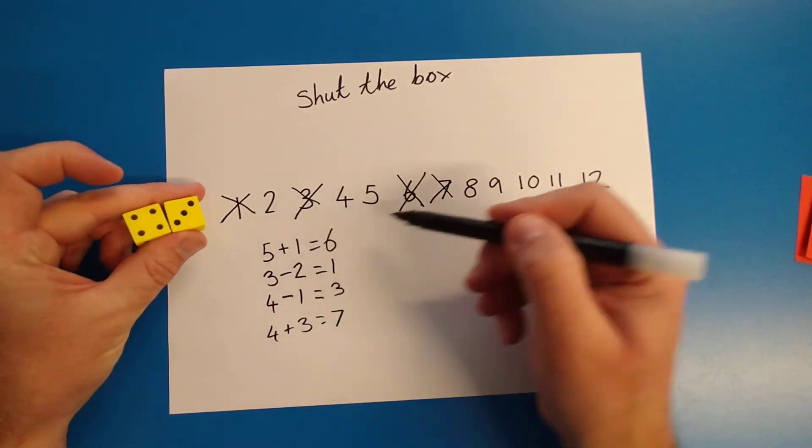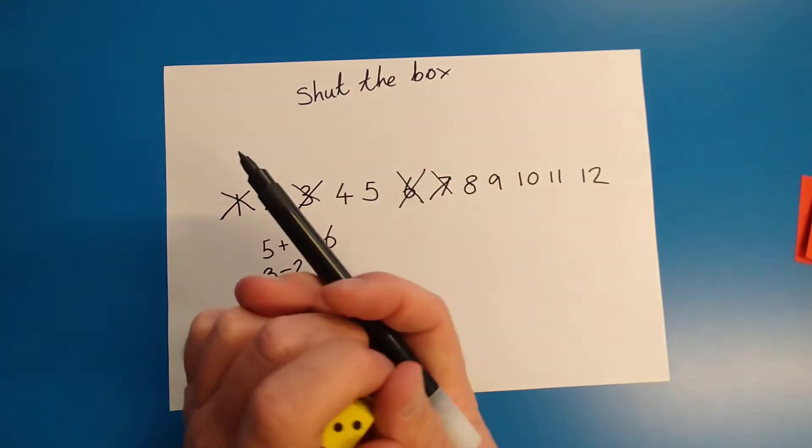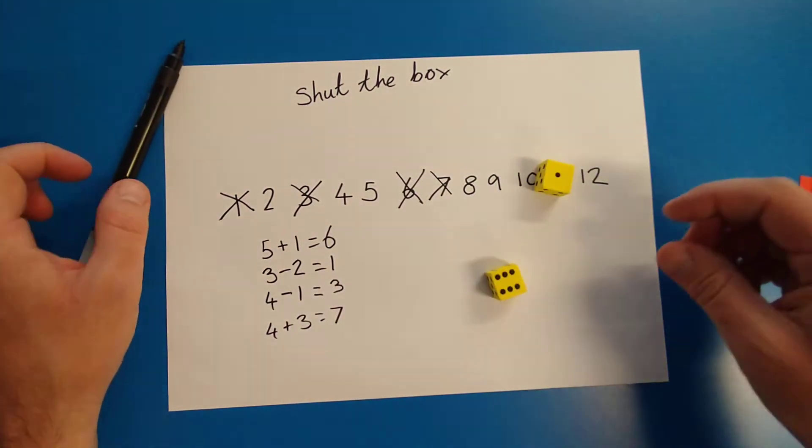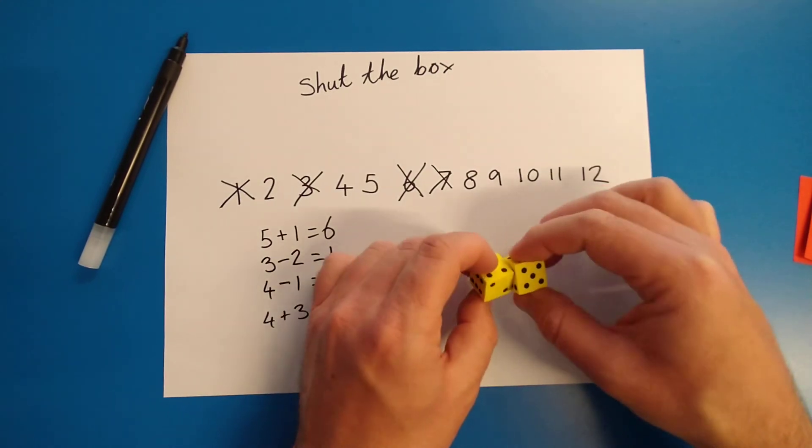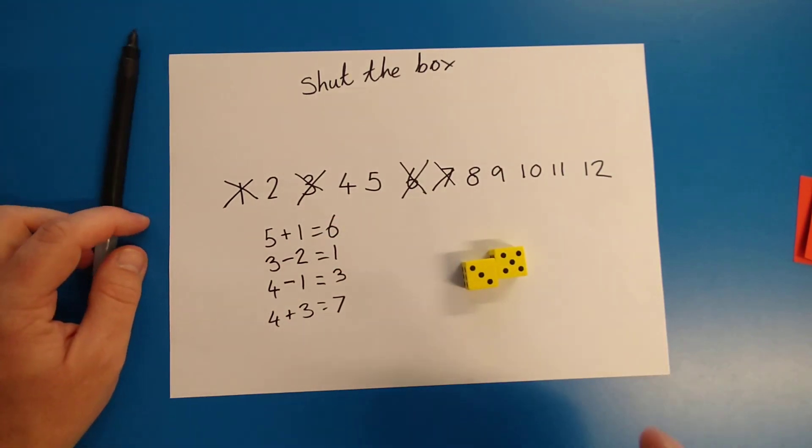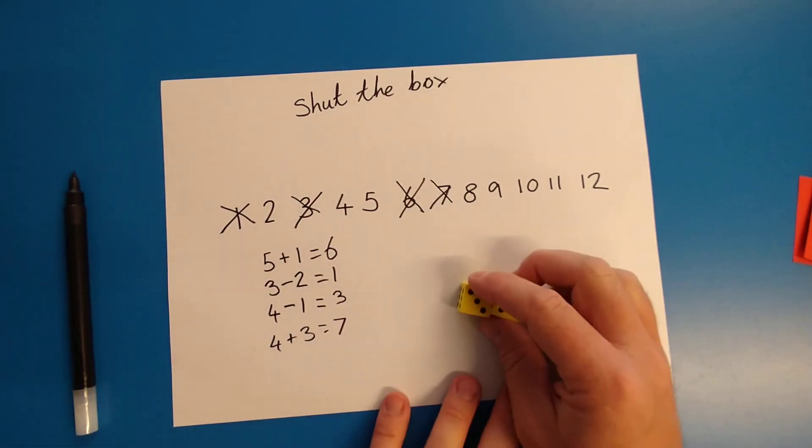The reason I'm writing them down here is because I know some of you are little cheaters sometimes. You're like, what do I need? I need an eight. Yay! I got an eight. No, you didn't. That was cheating. So that's what I want you to do. I want you to write them down so you can prove.